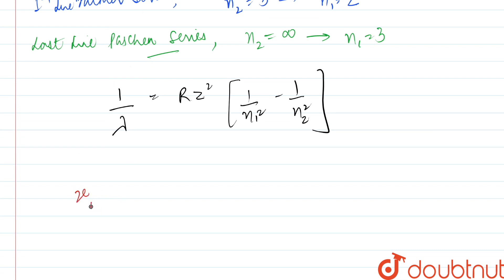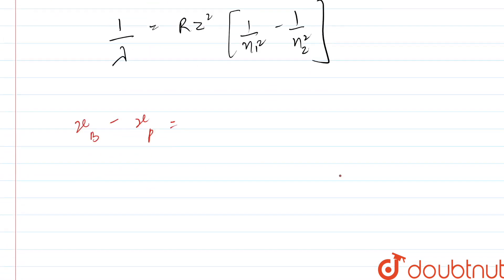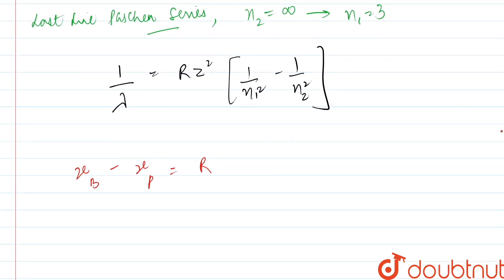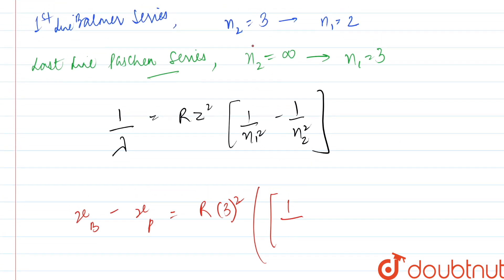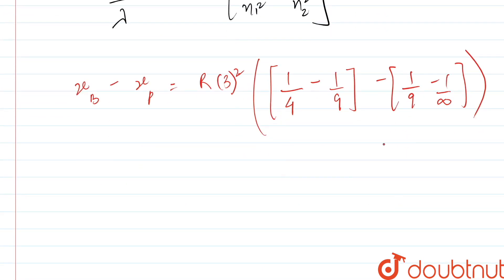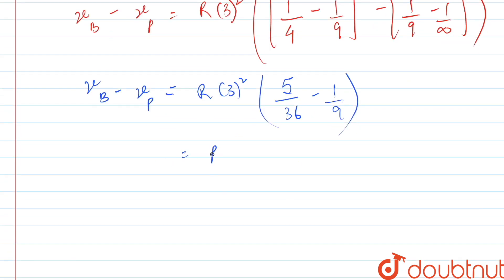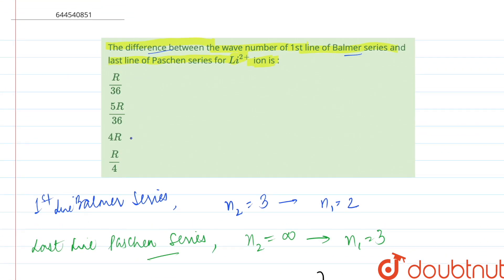So, wave number of Balmer minus wave number of Paschen: substituting the values, for Li²⁺ with Z equal to 3, we get R·Z² times (1/4 minus 1/9) minus R·Z² times (1/9 minus 0). On further solving, we get R·3² times (5/36 minus 1/9), which comes out to be R/4. This is option number B.